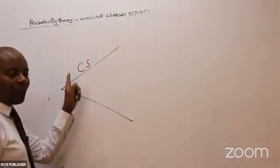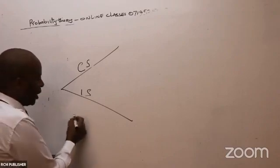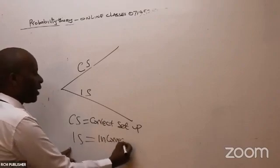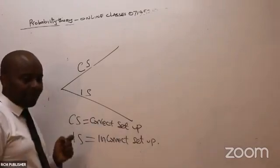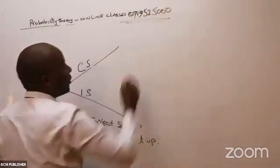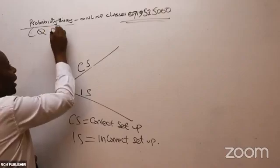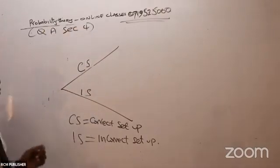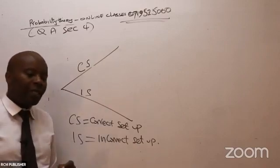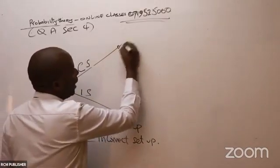We are given two scenarios: the first is being able to set up the machine correctly, or we experience an incorrect setup. CS stands for correct setup, and IS stands for incorrect setup. Probability theory is under quantitative analysis in CPA section four. So we've got two scenarios — either we set up our machine correctly or incorrectly — and for each one of them we are given two further scenarios.